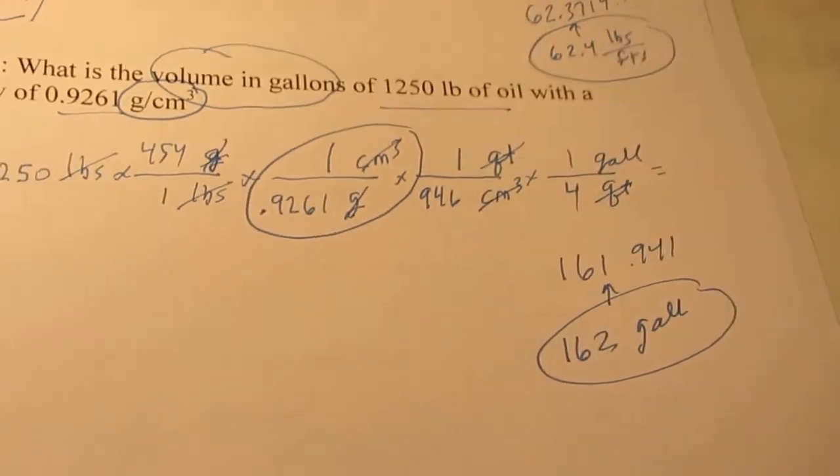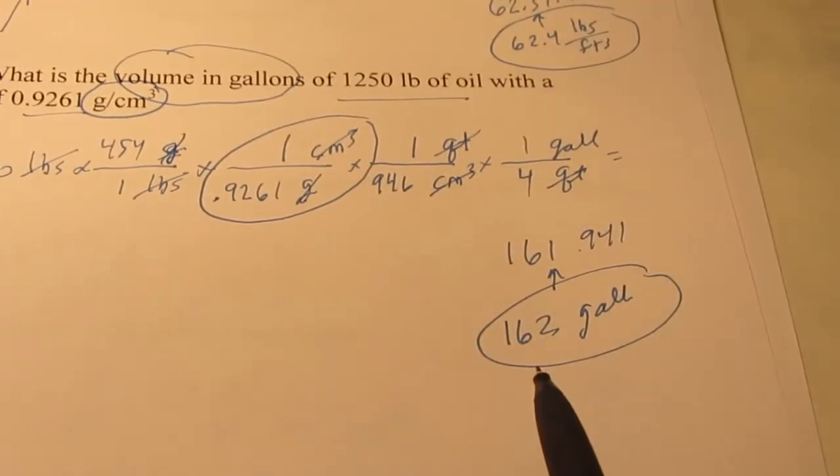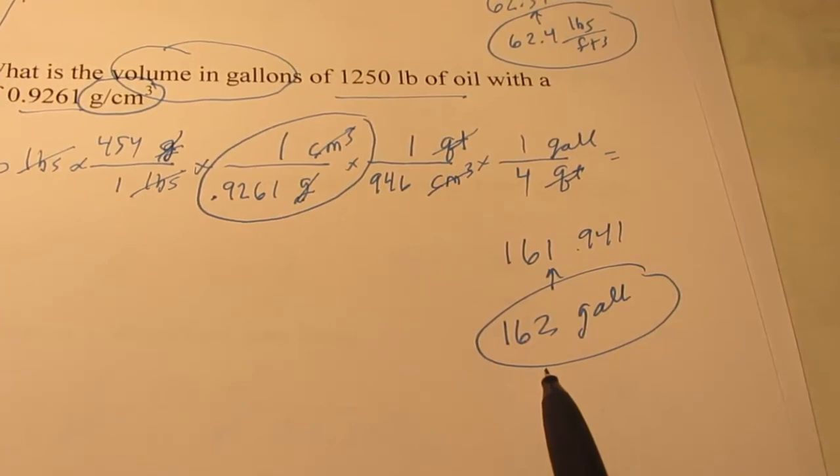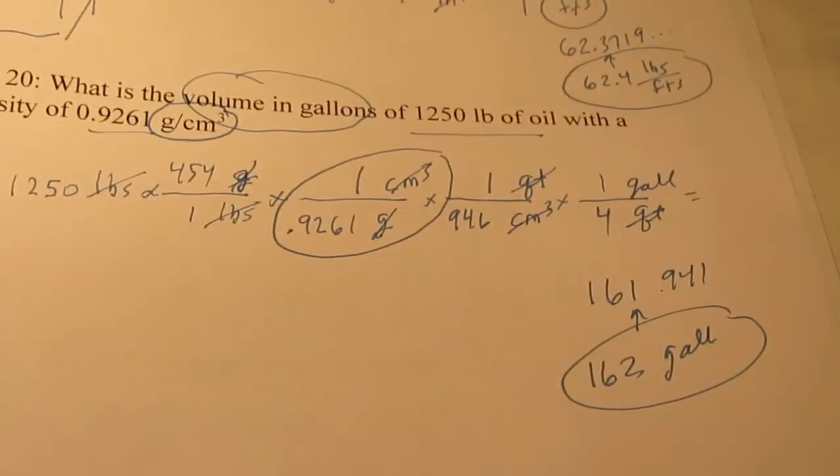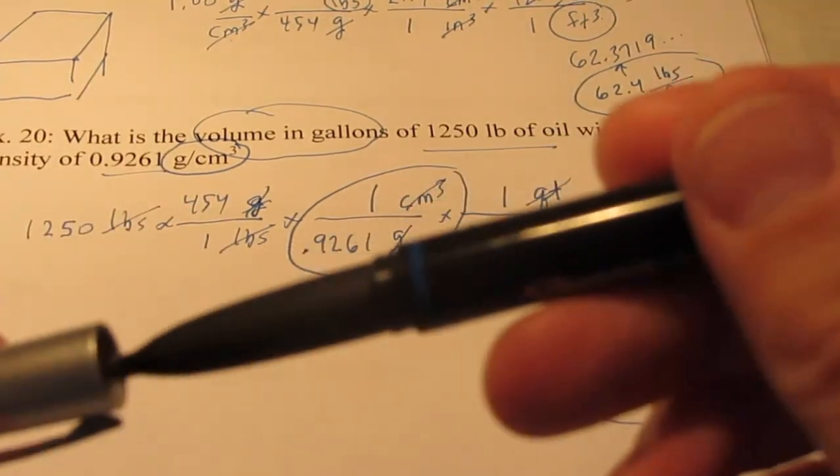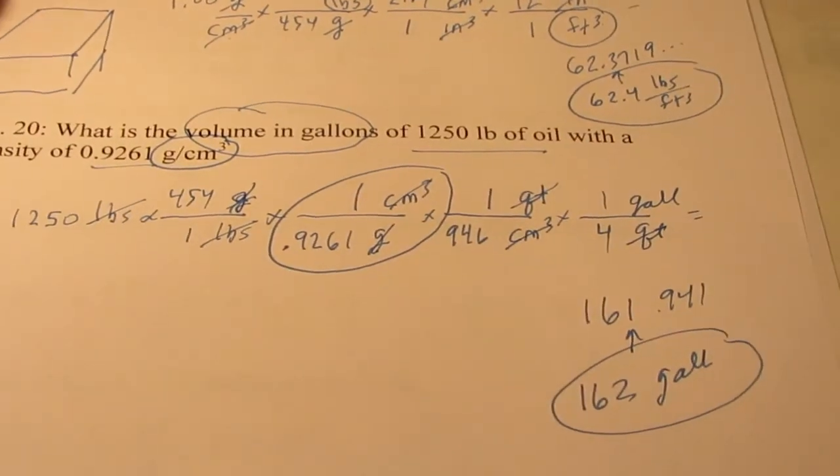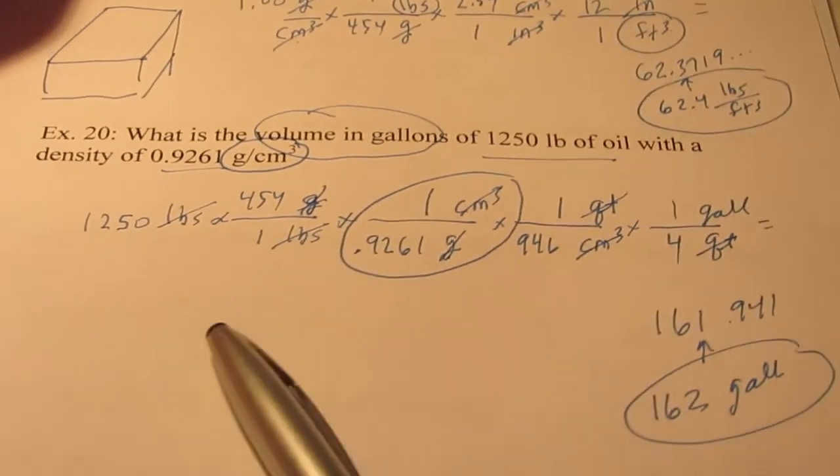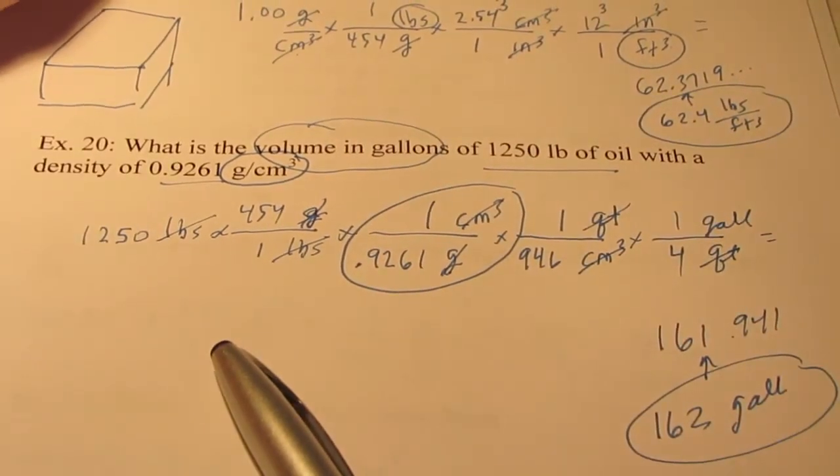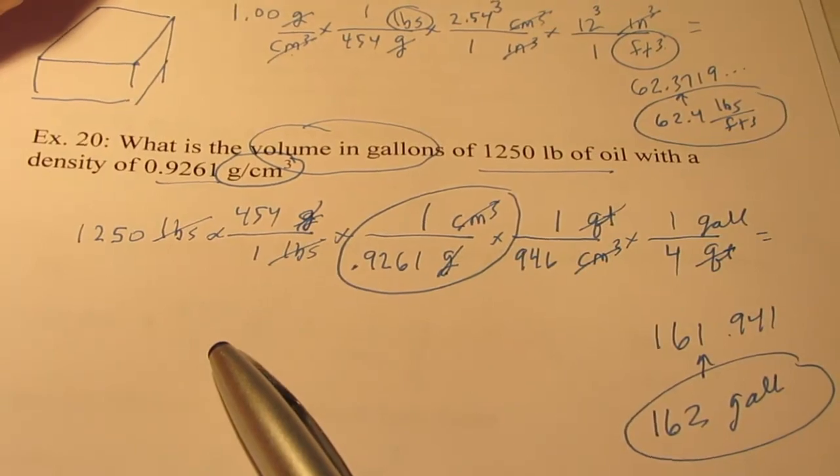That much oil, that weight of oil would be 162 gallons of oil. If you can do these, you can do any. Once again, you're going to want to review this section quite often throughout the year if you forget how to handle dimensional analysis and calculating in chemistry. So I hope this helped you. Thanks. Bye-bye.